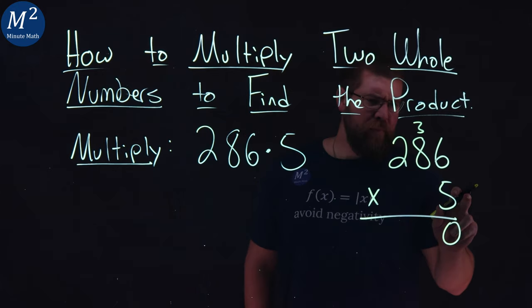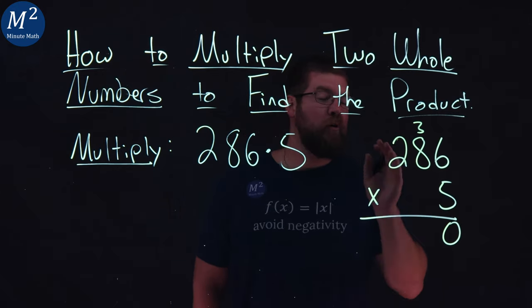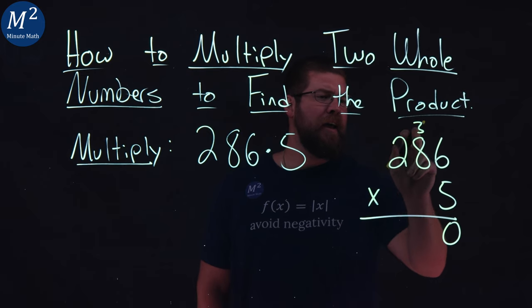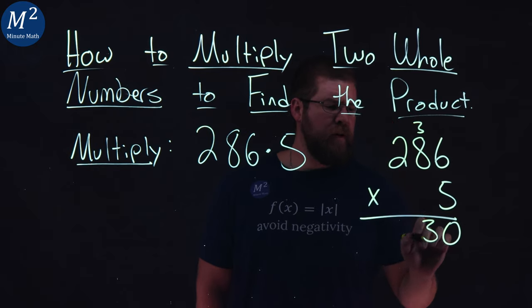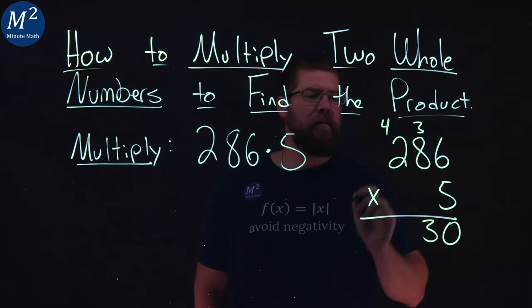Now, 5 times 8 is a good old 40, and then we have a 3 added to that. So 40 plus 3 is 43. 3 comes down here, carry the 4.